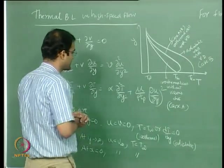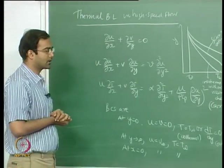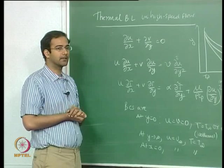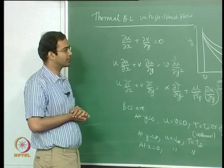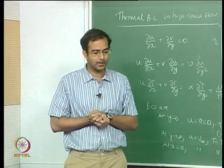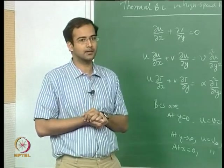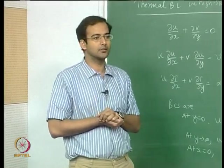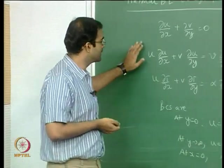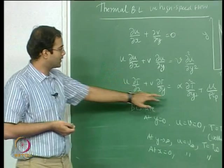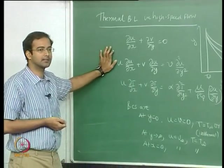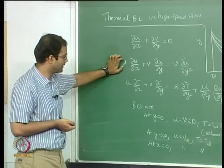We are also making an important assumption that the properties are constant, even though these are high speed flows where temperature fluctuations could be strong and properties like density could vary. We are ignoring that — assuming density is constant and all other properties are constant, and therefore taking all properties out of the derivatives. That is another constant property assumption we are making.